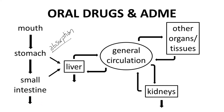The blood in the hepatic portal system enters the liver, which is rich in metabolic enzymes. Some drug may be chemically modified and broken down in the liver. This is metabolism — the M in ADME.